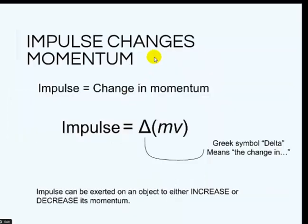Remember impulse can change the momentum. So impulse which is your force times time equals the change in momentum. This triangle means change. Here's the formula for momentum. Remember impulse is force times time. Impulse can be exerted on an object to either increase or decrease the momentum.